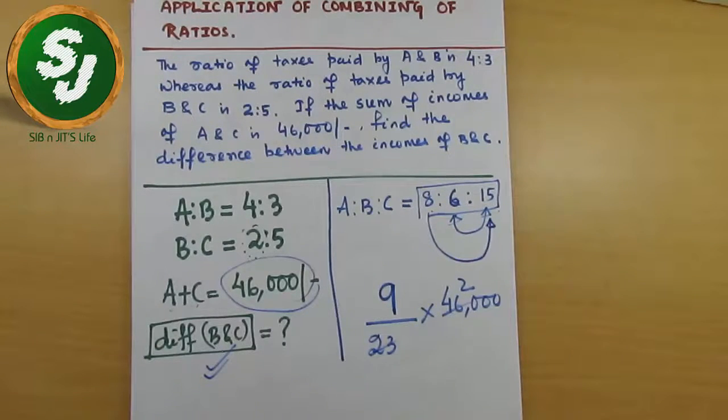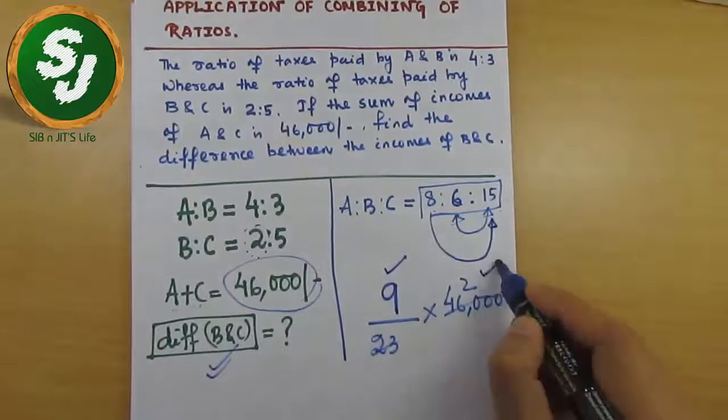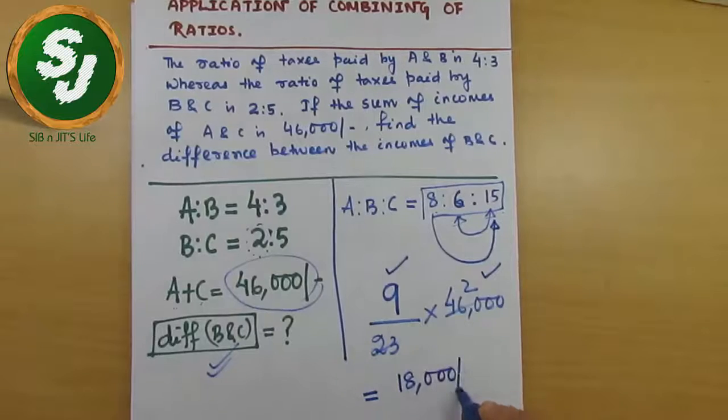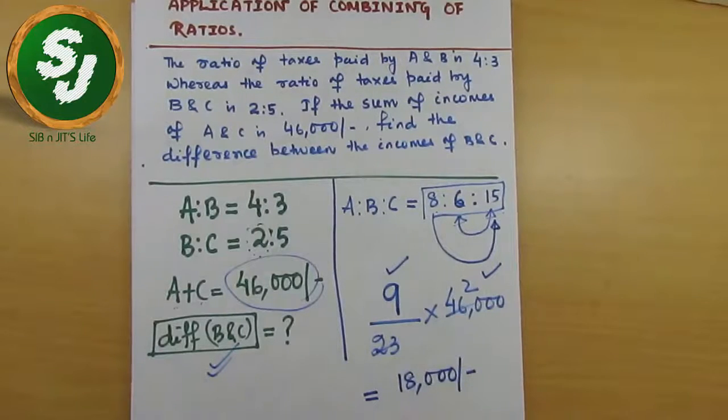So I'm writing here 46,000. If I cancel it, 23 twos are 46, so 9 into 2000 becomes 18,000. This is the answer to this question.